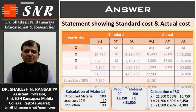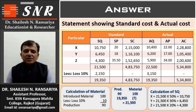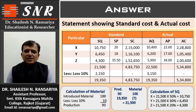Now we can prepare the statement of standard cost and actual cost. SQ for X: 10,750; SP: 20; standard cost: 2,15,000. SQ for Y: 6,450; SP: 18; standard cost: 1,16,100. SQ for Z: 4,300; SP: 35.5; standard cost: 1,52,650. Total standard quantity: 21,500; minus 10% loss: 2,150; net standard quantity: 19,350. Total standard cost: 4,83,750. Scrap value for the loss is not given, so the standard cost remains 4,83,750.